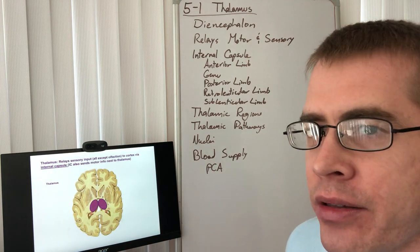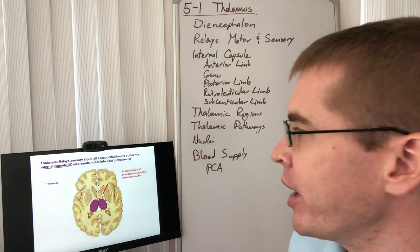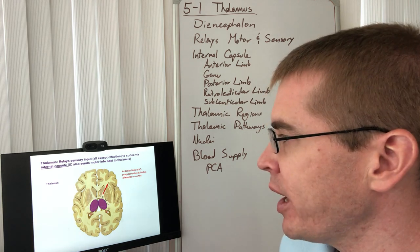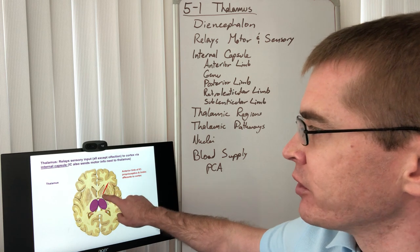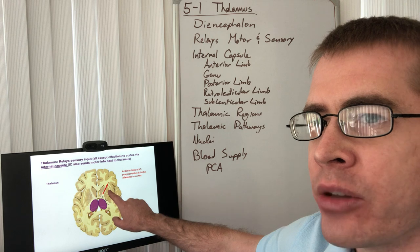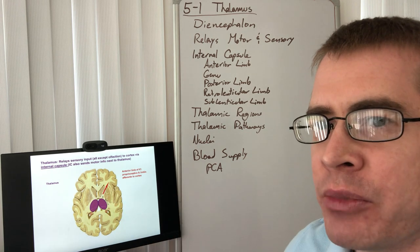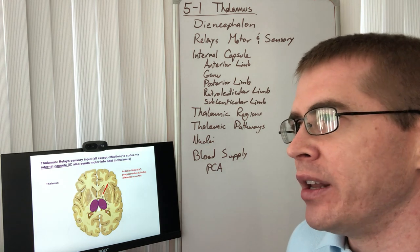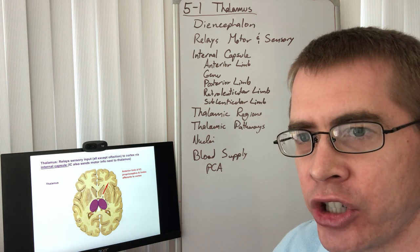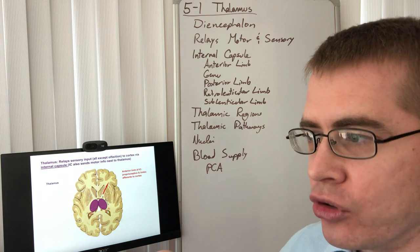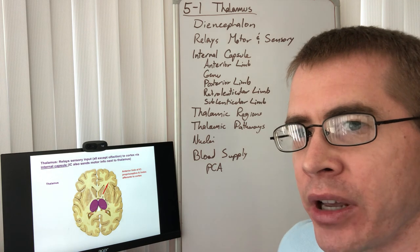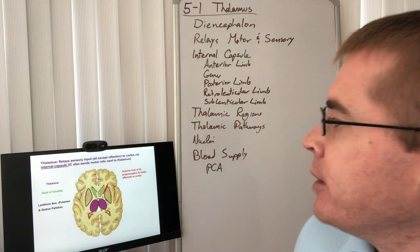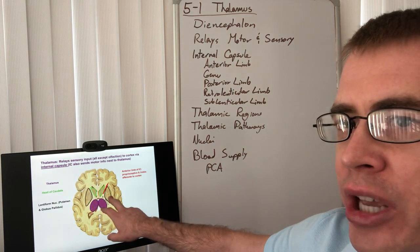Now let's look at the thalamus and the connecting white matter tracts around it, specifically the internal capsule. The internal capsule has a number of different regions. The anterior limb travels between the caudate nucleus and the putamen, and it sends proprioceptive information to the frontal cortex to regulate proprioceptive ability, giving us conscious awareness of how our body is oriented so we can adjust our posture. It also contains limbic projections up into the cingulate cortex and into the executive regions of the frontal cortex.